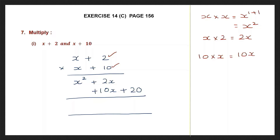In the x squared column we have only x squared. In the next column we have plus 2x plus 10x — signs are the same, so put the same sign and add: 10 plus 2 is 12, then we write x. And here we have 20. So the final answer is x squared plus 12x plus 20.